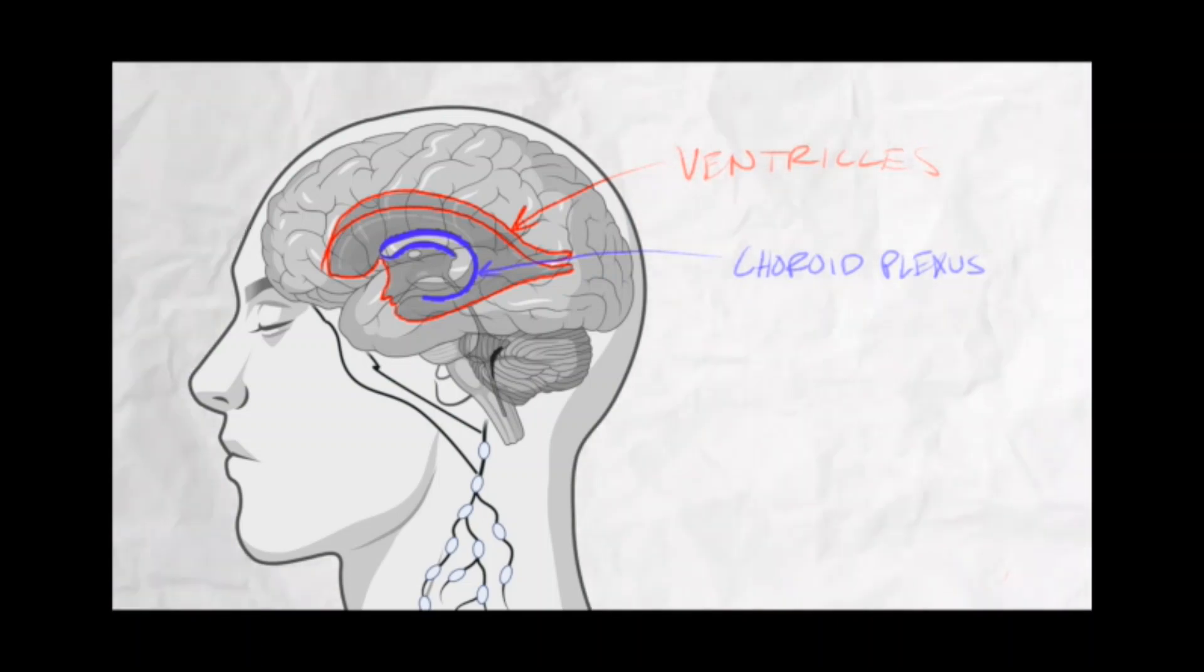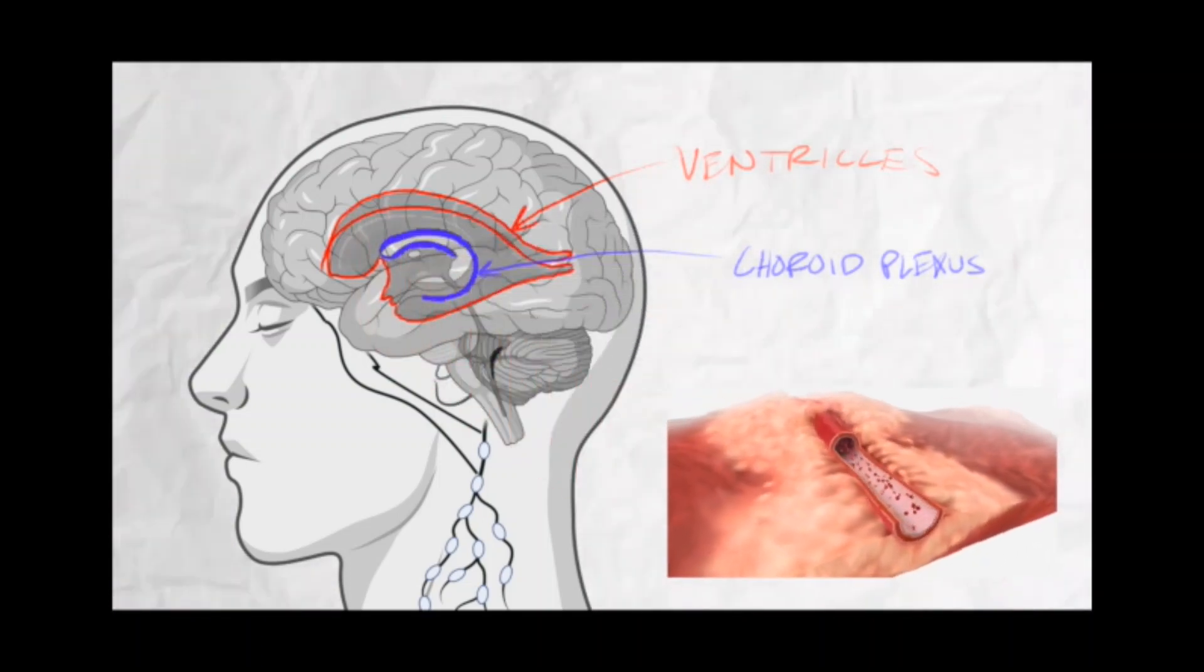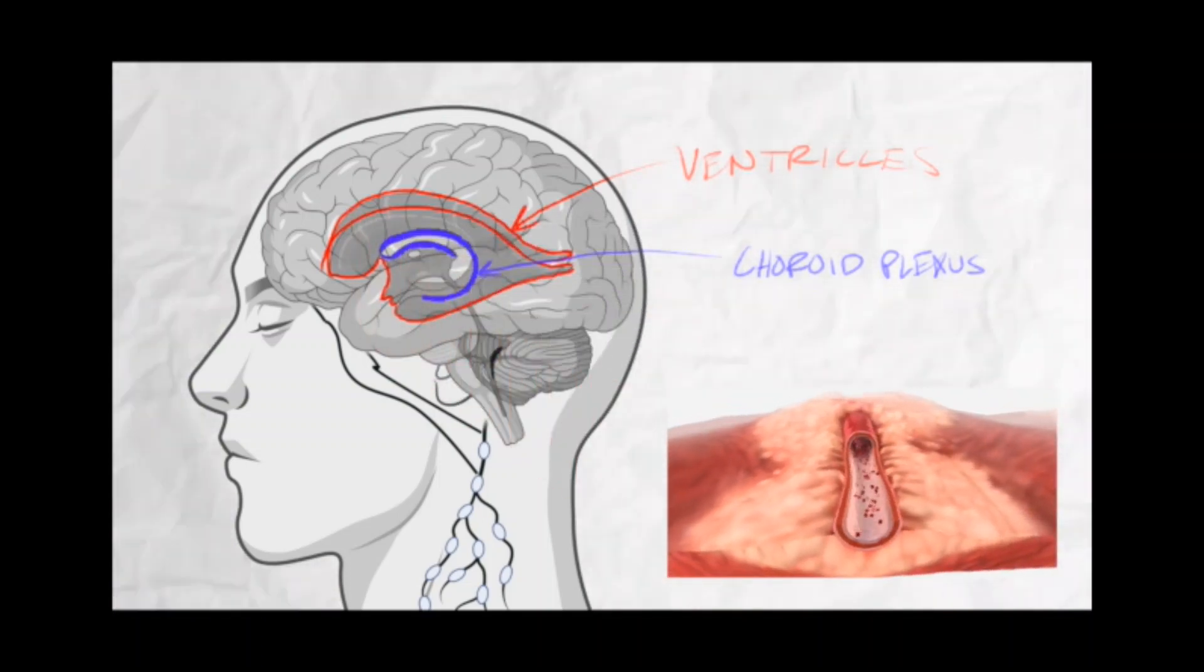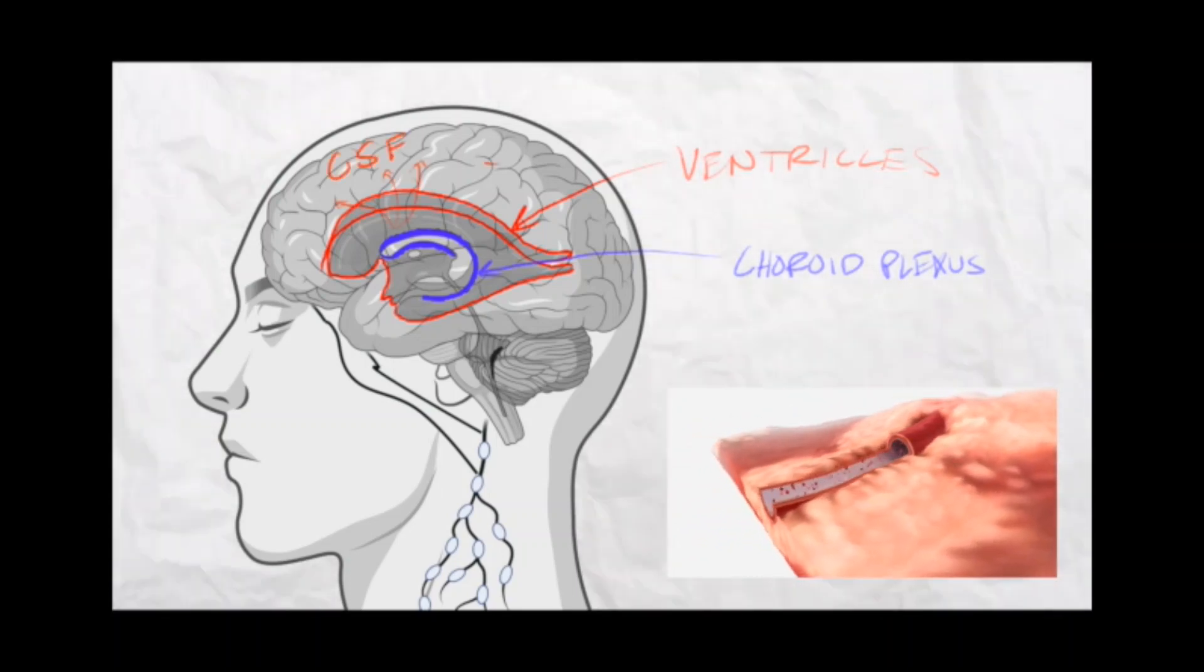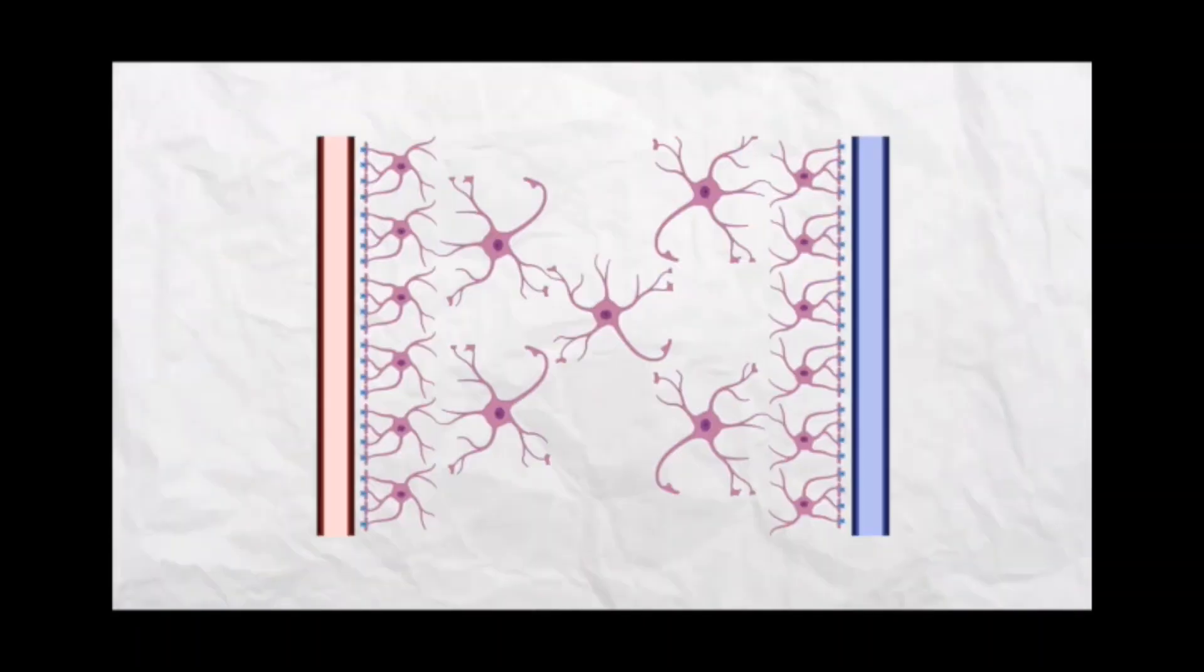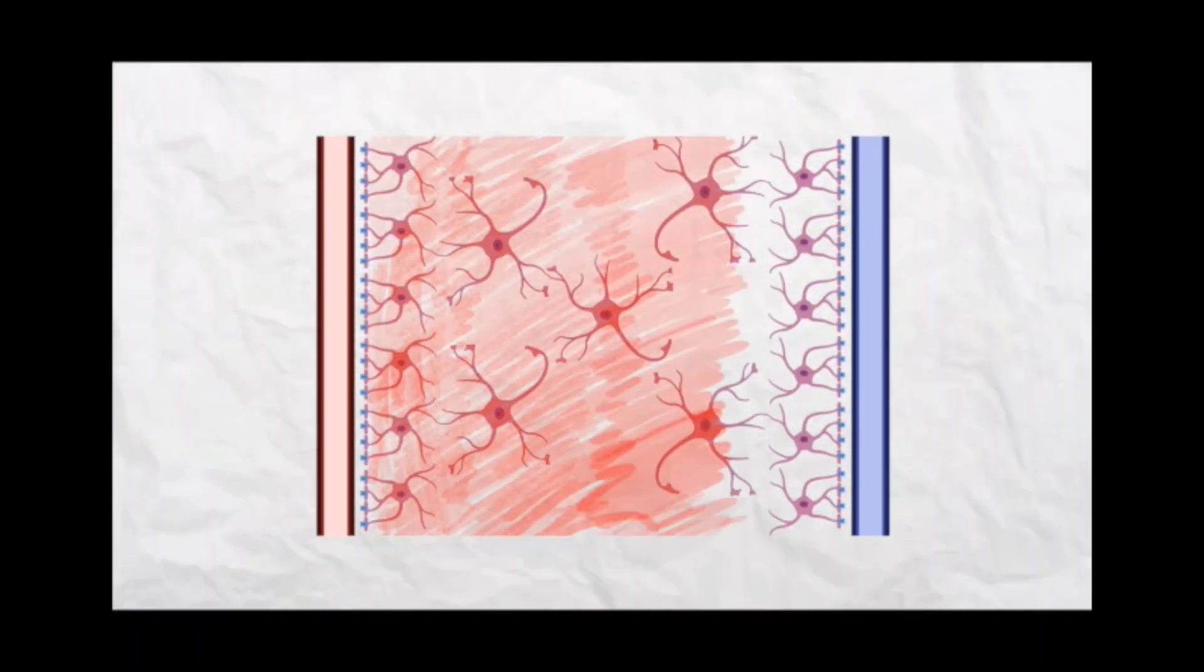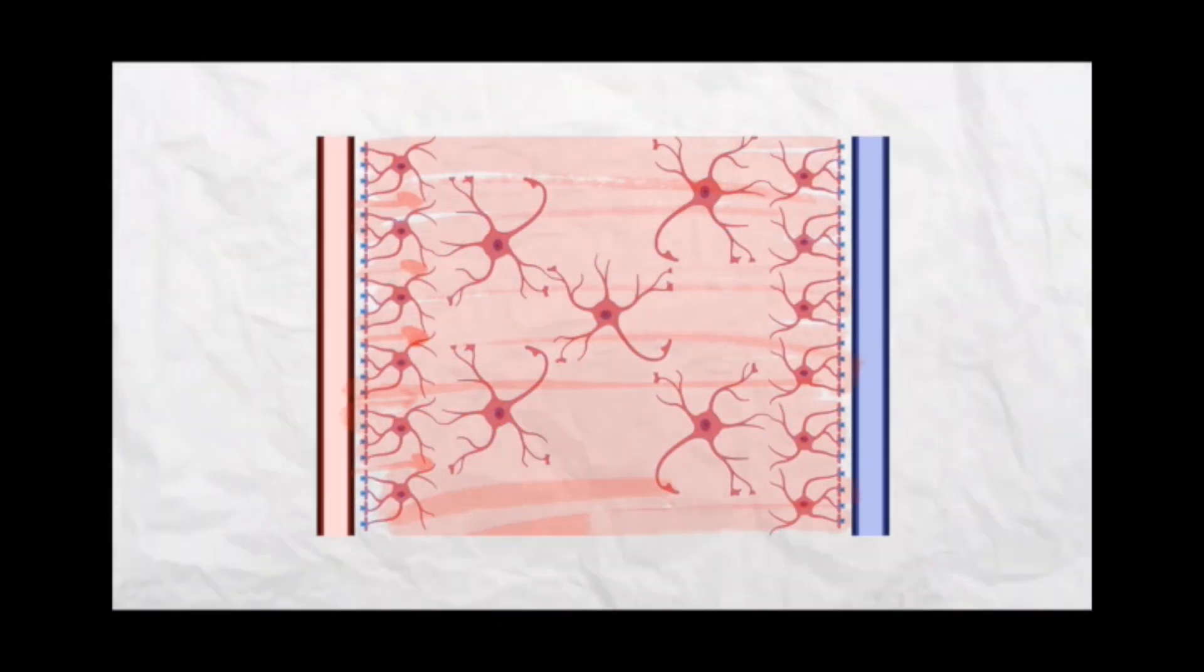Before any waste reaches the brain, the choroid plexus filters out the plasma from the blood and produces CSF to circulate through the ventricles, then surrounds the brain and spinal cord. CSF now travels into spaces around cells to provide vital nutrients to the brain cells, and in the process blends with interstitial fluid.